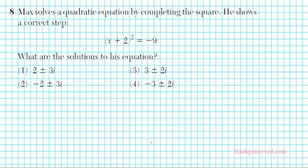Let's take a look at number 8. The problem says Max solves a quadratic equation by completing the square. He shows the correct step — what are the solutions to his equation? He successfully completed the square and factored it into the square of a binomial. To finish this up, we simply have to get rid of the square and the 2, isolating x, and that will be the solution of our quadratic equation.